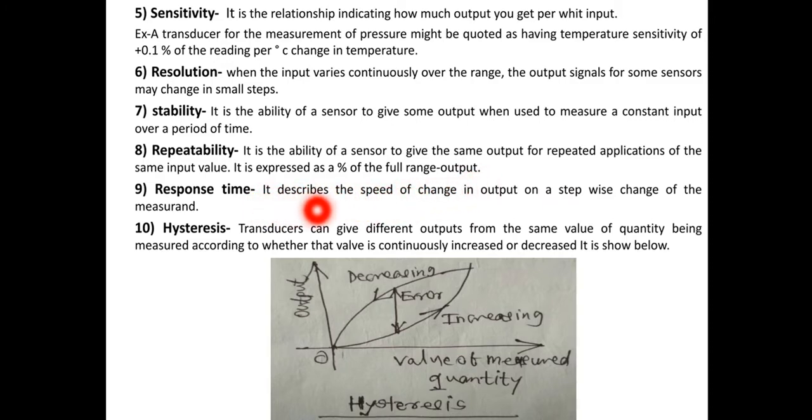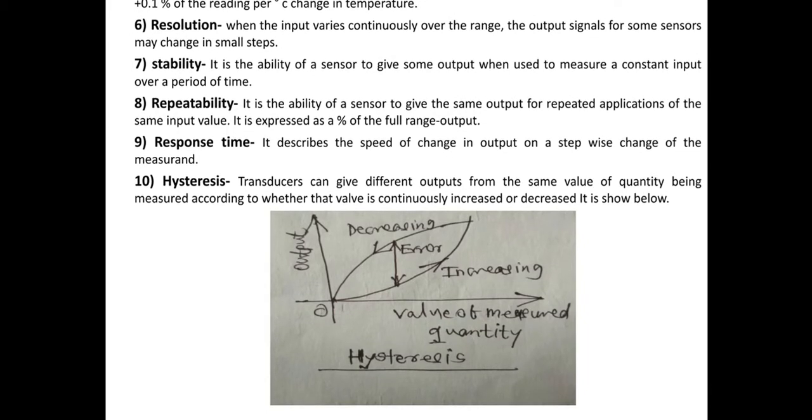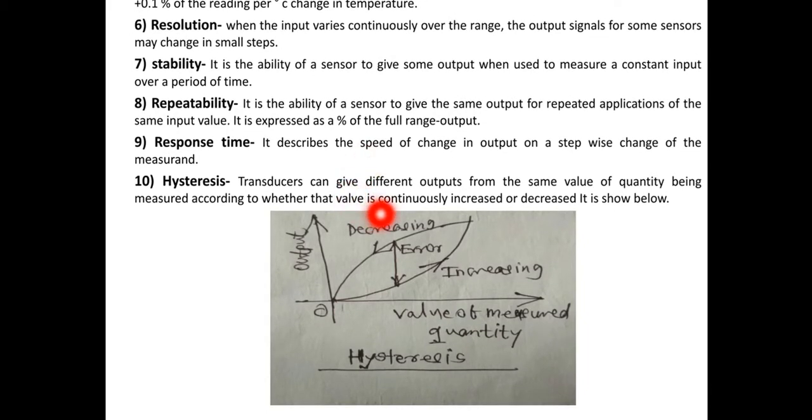Response time: it describes the speed of change in output on a step-wide change of the measurement. Hysteresis: transducers can give different outputs from the same value of the quantity being measured.